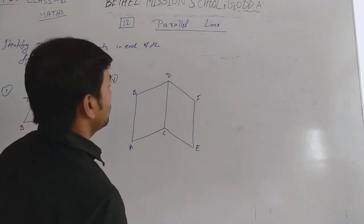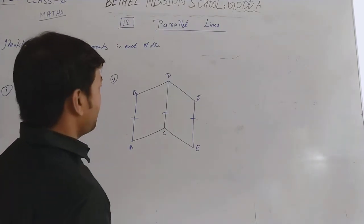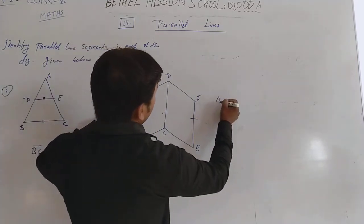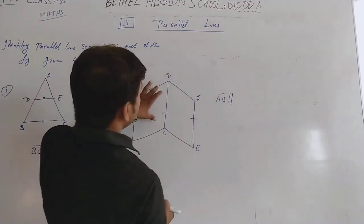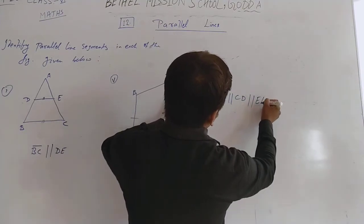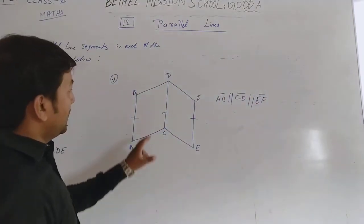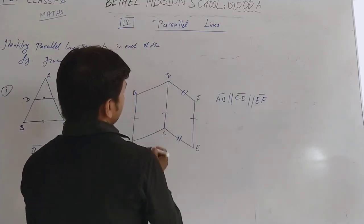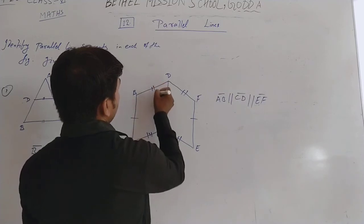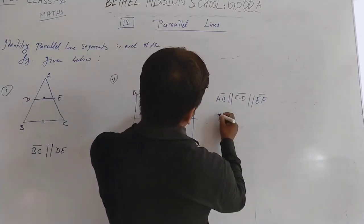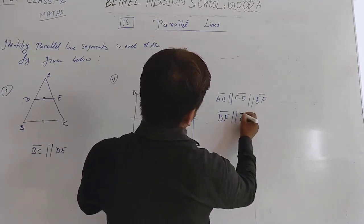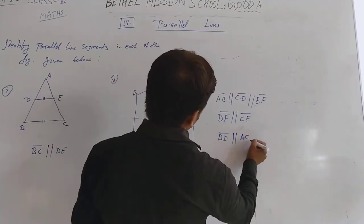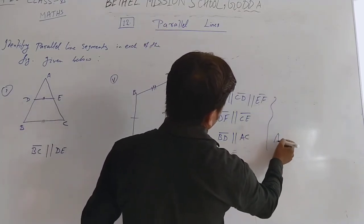Here also, three lines are parallel: this, this, and this. This is parallel to this, and this is parallel to this, and this is parallel to this. So we write: AB is parallel to CD and parallel to EF — three lines are parallel. And also BF is parallel to CE. This is the answer.